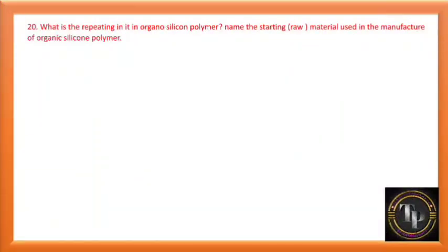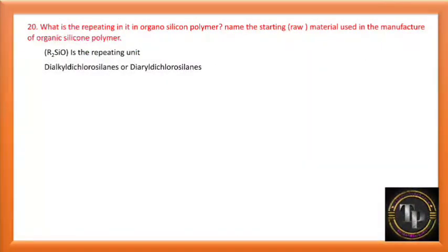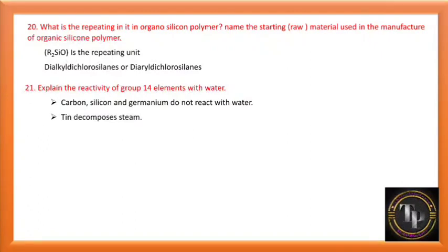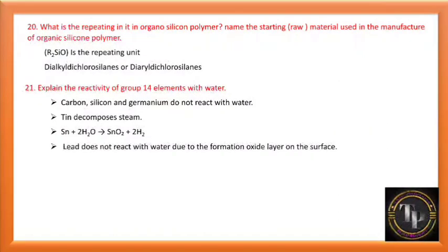What happens when silica is heated with NaOH? SiO2 + NaOH gives Na2SiO3 (sodium silicate). What is the repeating unit in the organosilicon polymer? The repeating unit is R2SiO. The starting material used in the manufacture of organosilicon polymer is dialkyl dichlorosilane or diaryl dichlorosilane. Explain the reactivity of group 14 elements with water: carbon, silicon, and germanium do not react with water; tin can decompose steam — Sn + H2O gives SnO2 + H2; lead does not react due to formation of an oxide layer on the surface.